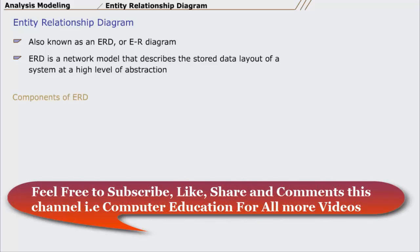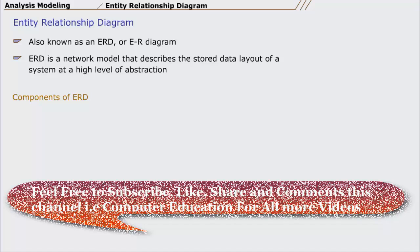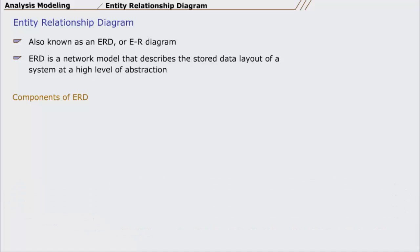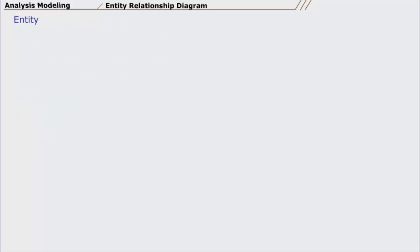Let us start with the components of an Entity Relationship Diagram, which are Entities, Attributes, and Relationships. Let us see each one of the components in detail, starting from Entity.